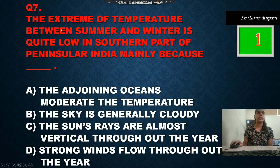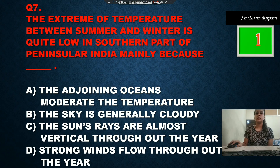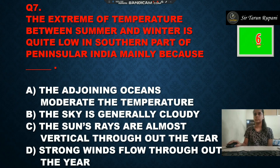Our next question: the extreme of temperature between summer and winter is quite low in the southern part of Peninsula mainly because — option A is the adjoining oceans moderate the temperature, option B is the sky is generally cloudy, option C is the sun's rays are almost vertical throughout the year, option D is the strong winds flow throughout the year. The correct answer is the adjoining oceans moderate the temperature, option A.